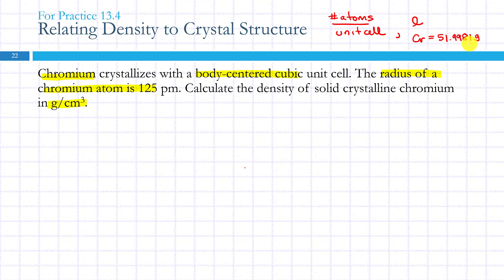The approach that we're going to take is this: we know the density is equal to mass over volume. What we'll do first is we'll find the mass of a unit cell in grams.